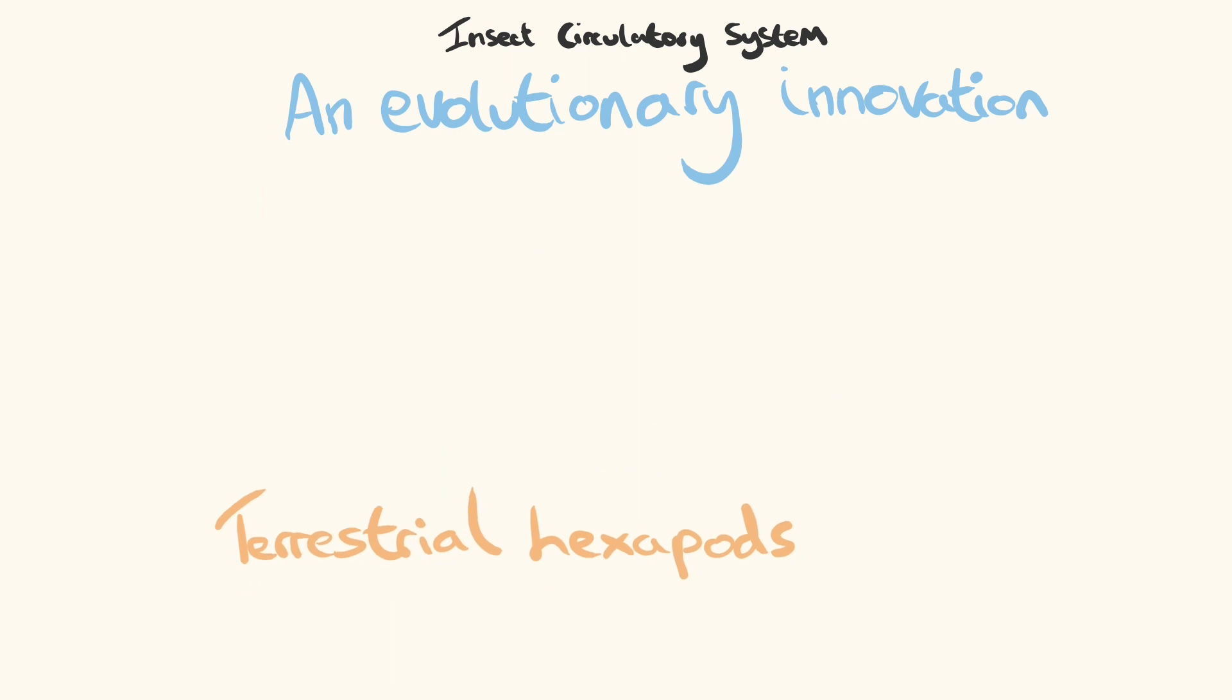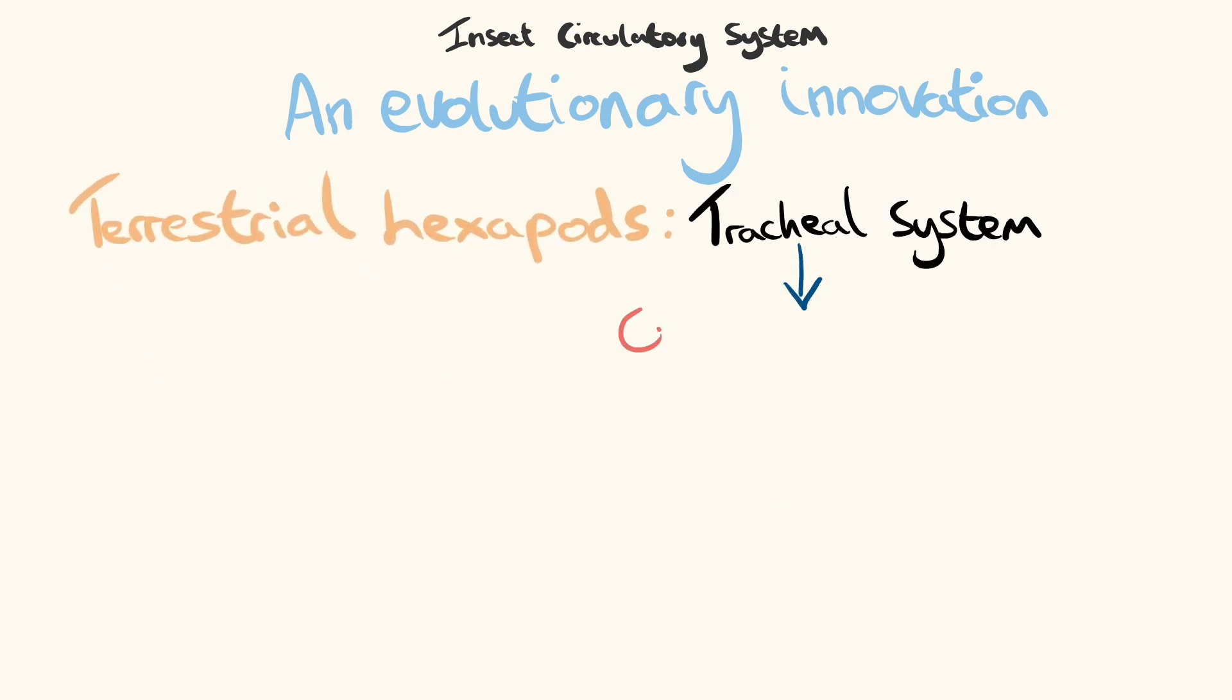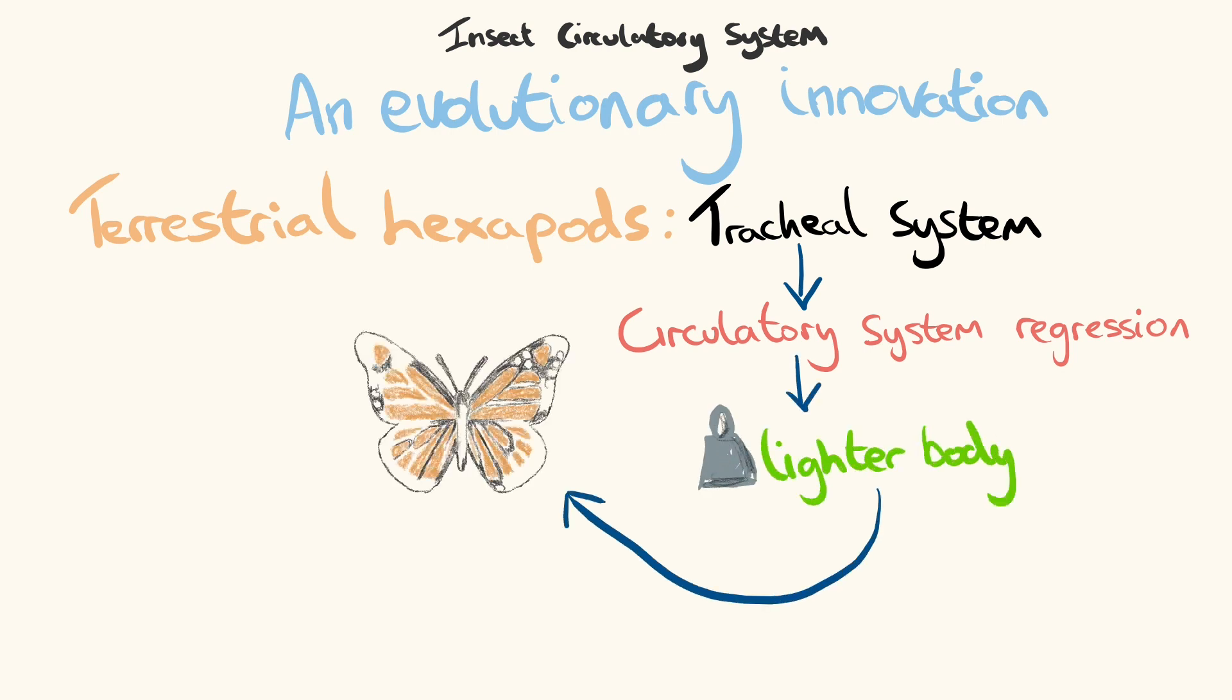As tracheal volume increased, hexapods experienced a reduction in the circulatory system to the simpler one we see today. This decrease in haemolymph volume is a key innovation which is also parallel with the increase in tracheal volume. This has allowed for insects to be lighter, a key trait selected for flying.